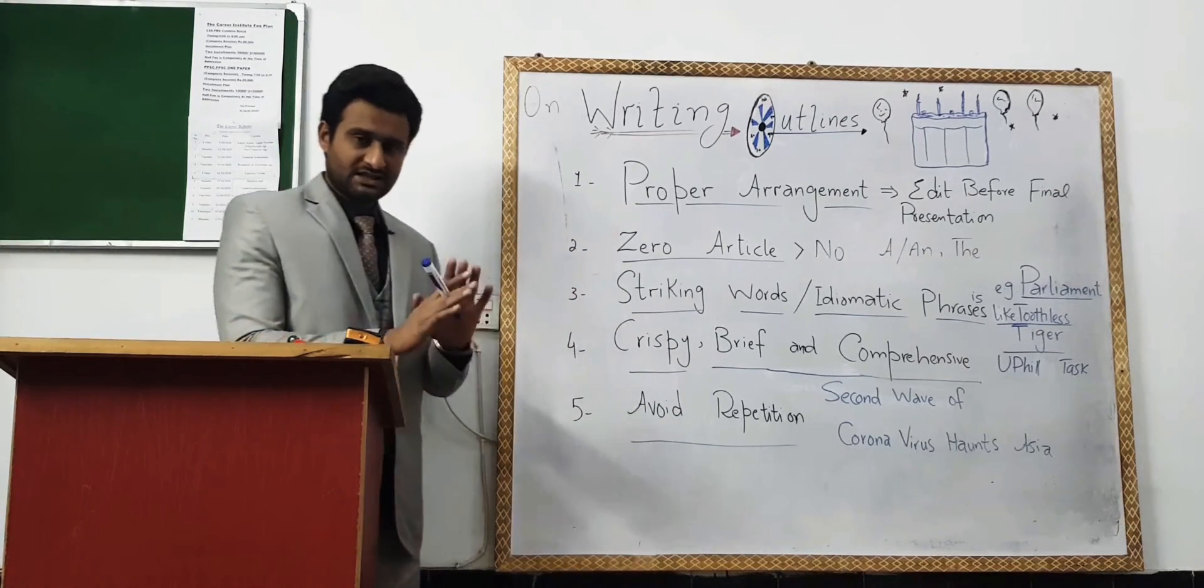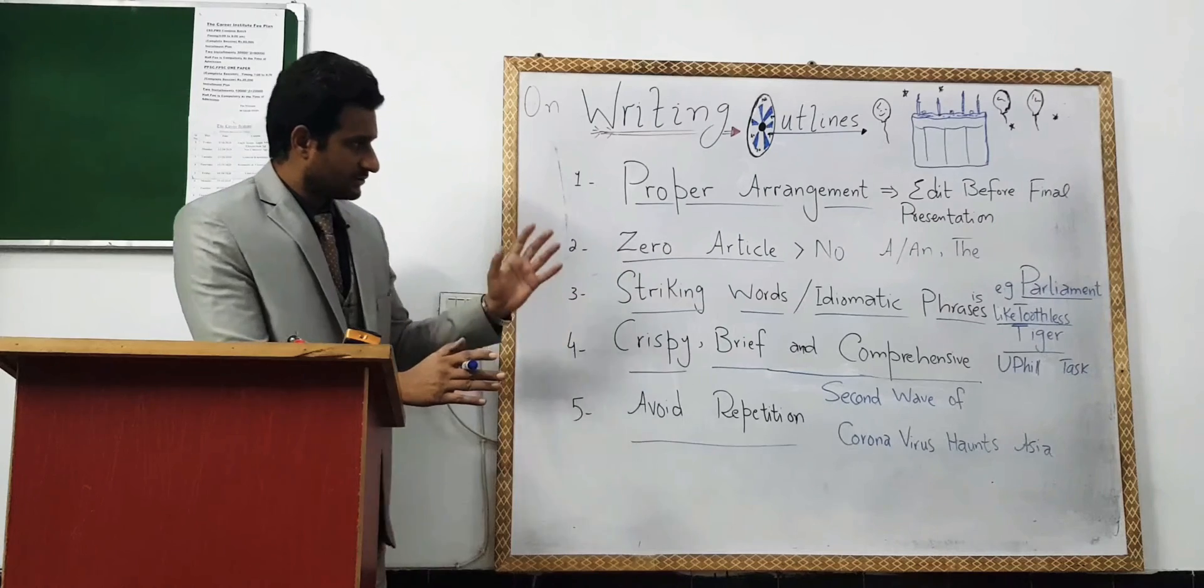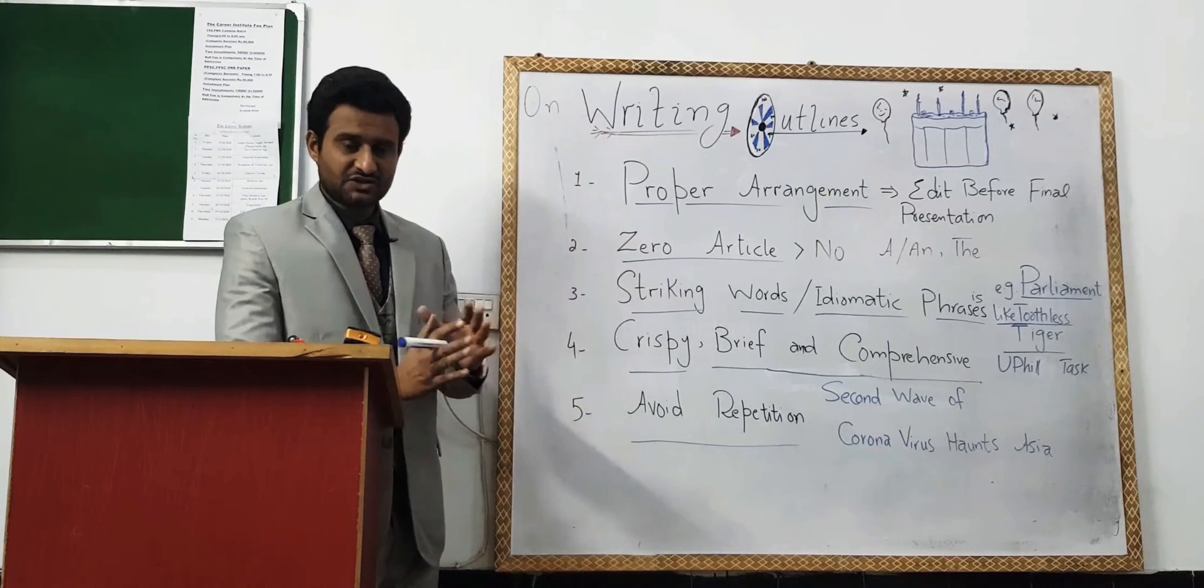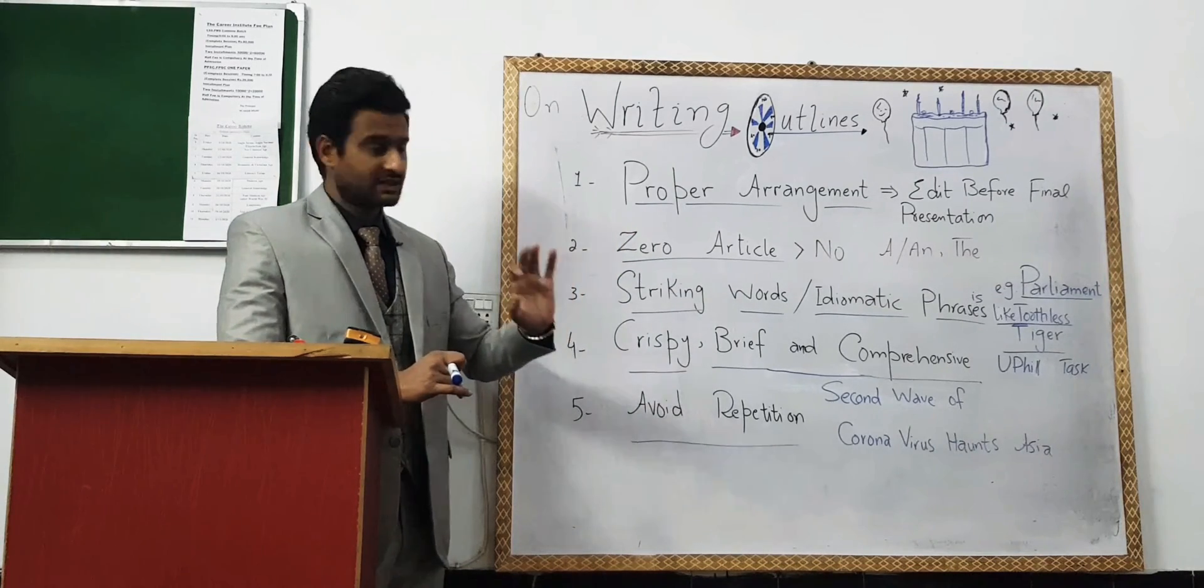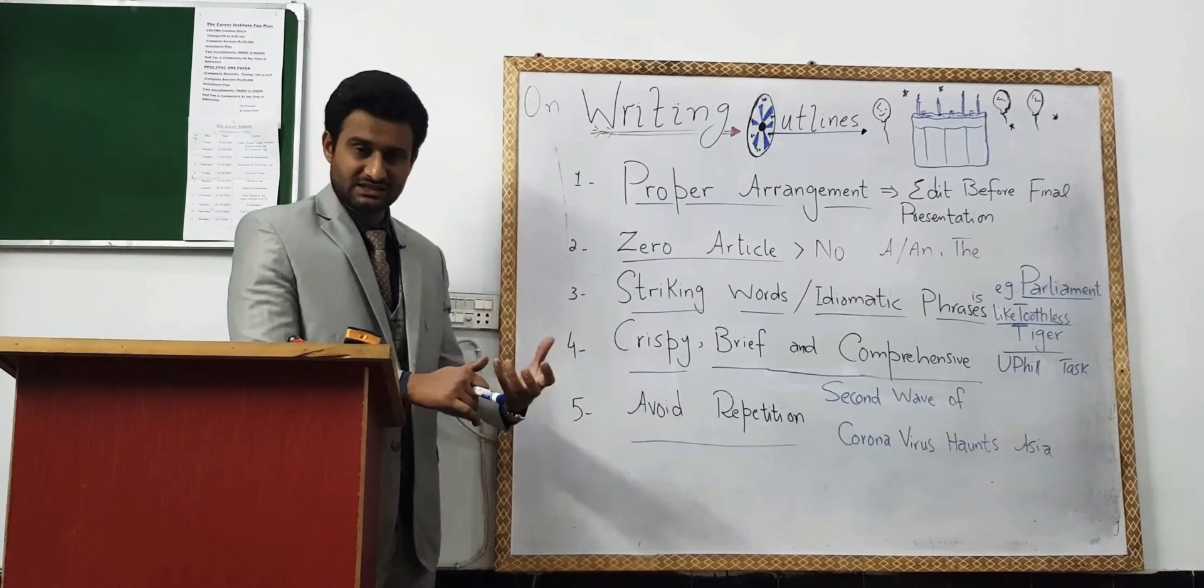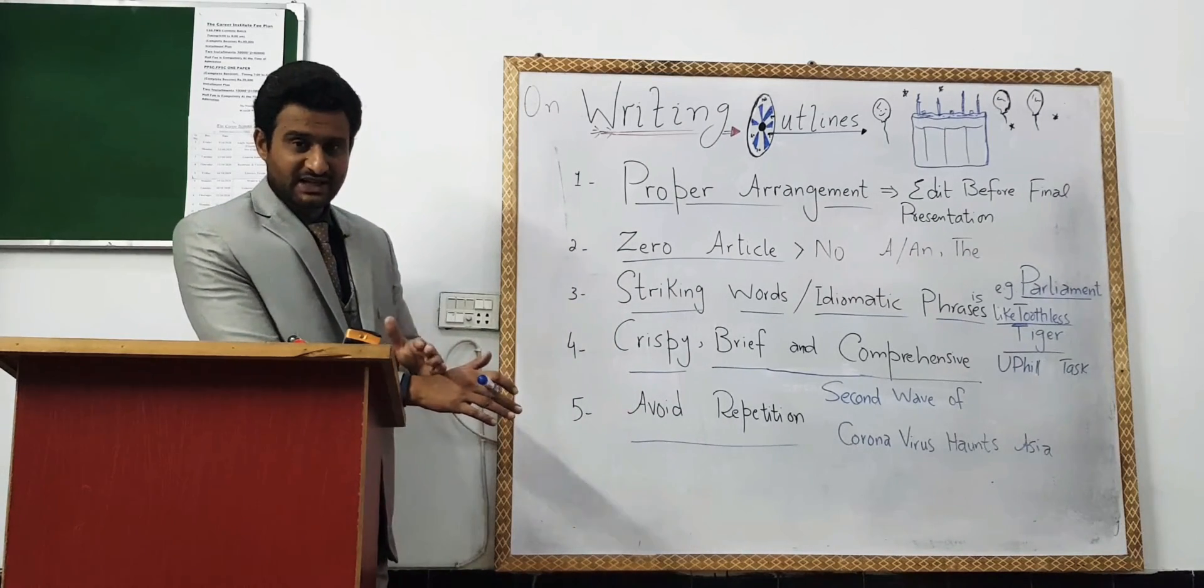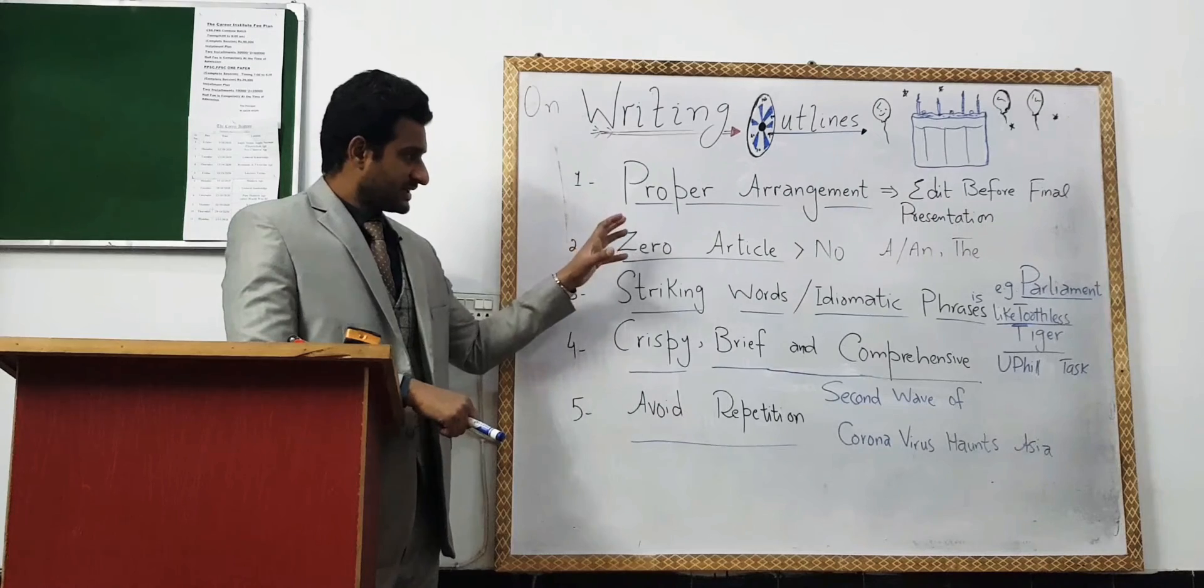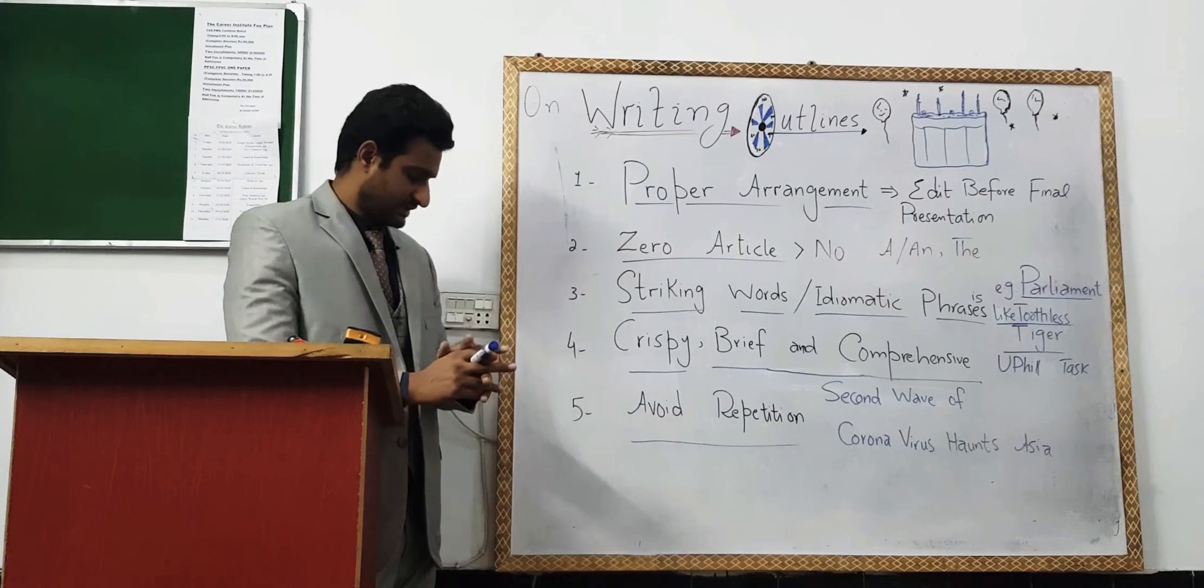The first principle is proper arrangement. In the previous lecture, I told you that when we have brainstorming and generate ideas, you have to set them in the proper way. You will choose the most relevant ideas, which is the most relevant idea, and make them your top priority. In descending order, arrange the ideas from most to less significant. And if you understand that the ideas are irrelevant, you will discard them or dustbin them. After proper arrangement, you have to arrange your outlines in a big sequence.